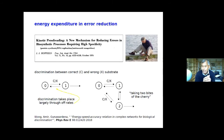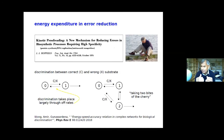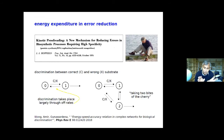The elevator pitch for kinetic proofreading: Hopfield's advice is to take two bites of the cherry. You do one discrimination, then you move to a different state and allow the substrate to bind and unbind again. If you have an error rate of ε from the first step and ε from the second, you'd expect ε² by doing it twice — that's taking two bites of the cherry. But where does energy enter the picture? This is where it gets interesting.